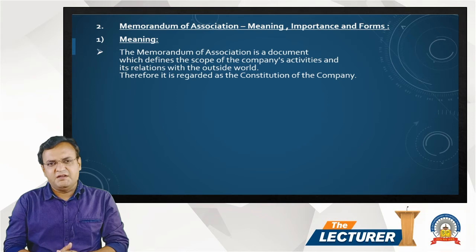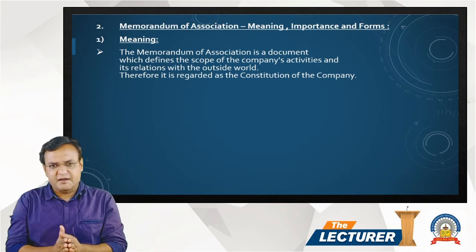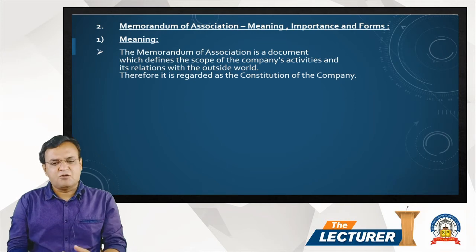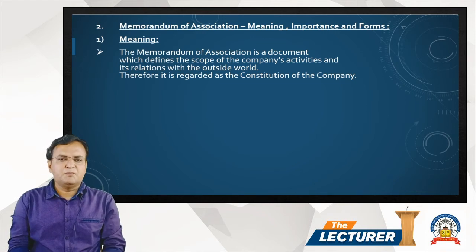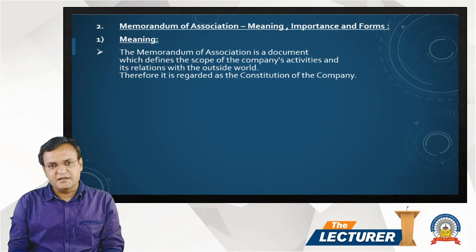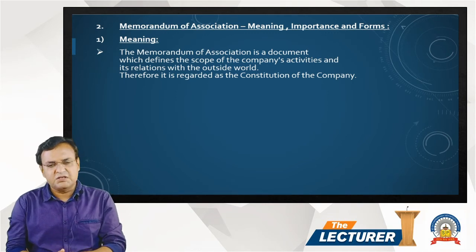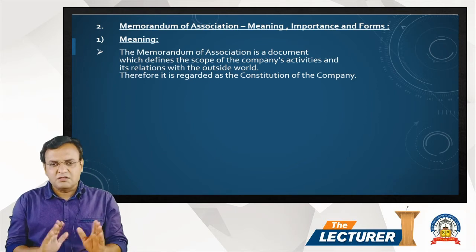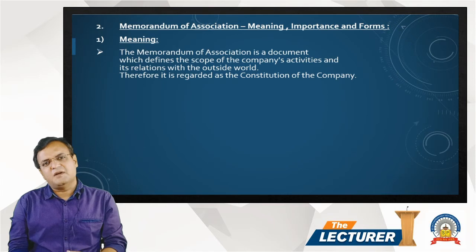The memorandum defines what activities and business transactions the company can carry out. From the object clause in the memorandum of association, we can define the scope of activities and its relation with the outside world. The company is an artificial person having a separate legal identity, and all the scope of authorities and activities is defined by the provisions of the memorandum.